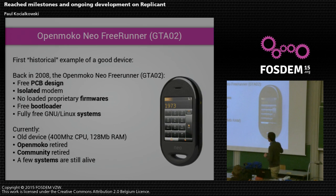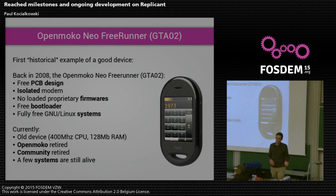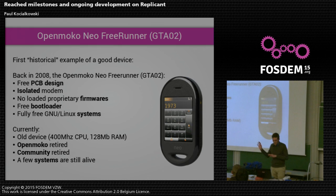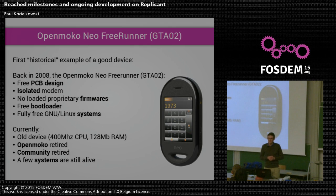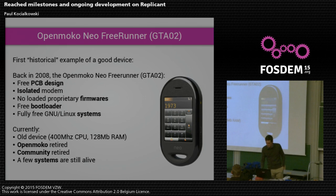Very quickly: the OpenMoco Freerunner was the first historical example of a good device. It had free PCB design and isolated modem, no loaded non-free firmware, and a free bootloader and system. But it's kind of old — only 400 MHz, 128 megabytes of RAM. That's low-end and slow. Eventually the company that made it retired and the community also retired, though a few systems like QtMoco and SHR are still around.